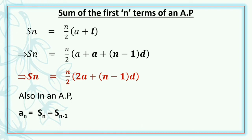Also, in an AP, the nth term an at a particular position is equal to Sn minus Sn−1, or it is the difference between the sum at the given position and the sum at the previous position. So, an = Sn − Sn−1.